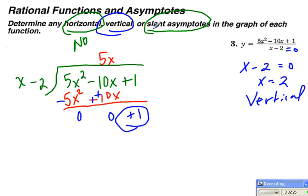But when we're looking for the equation of the slant asymptote, we just discard the remainder. And that means my slant asymptote is located along the line y equals positive 5x.